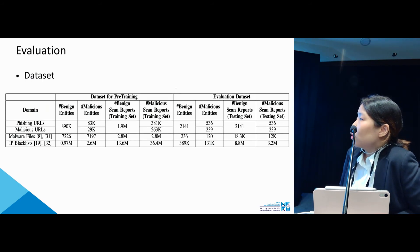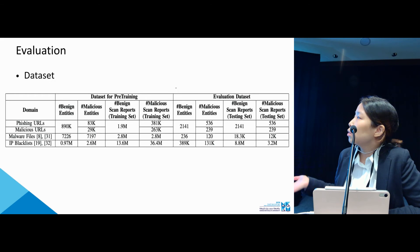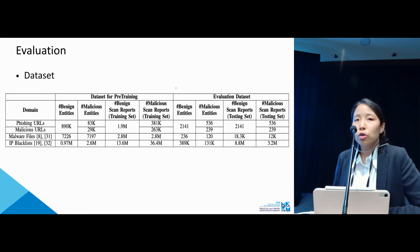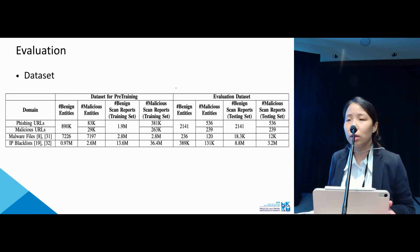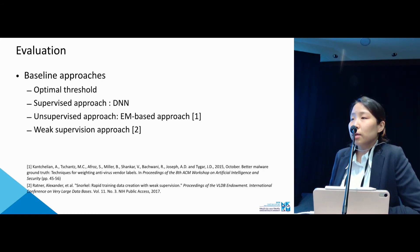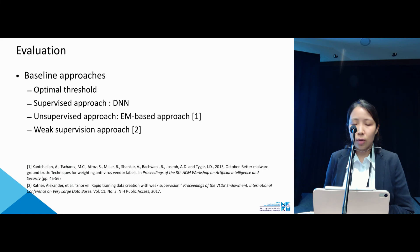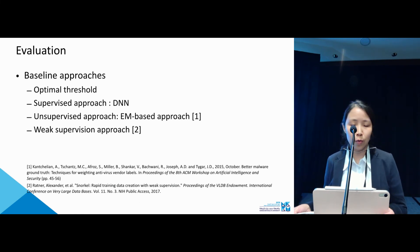This table shows the datasets we used. The URLs were collected by ourselves and the other datasets were collected from other papers. To show the generality of our approach, we use four different types of internet threats: phishing URLs, malware URLs, malware files, and IP blacklist. We compare our approach against four baselines: the optimal threshold, a supervised deep neural network approach, an unsupervised EM-based model, and a weak supervision model — details of which can be found in the paper.